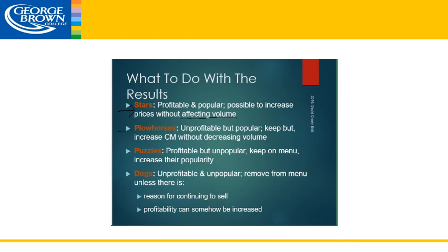Plow horses are unprofitable but popular, so you want to keep those on your menu but try to increase the contribution margin without decreasing the sales volume. To increase our contribution margin we'd have to either increase our price or decrease the cost — both would yield an increase in contribution. The problem is if we increase our price too much, the sales volume might go down, making it unpopular and turning it into a dog. The best way to turn a plow horse into a star is really to take a look at your food cost and see if you can cut it down a little bit.